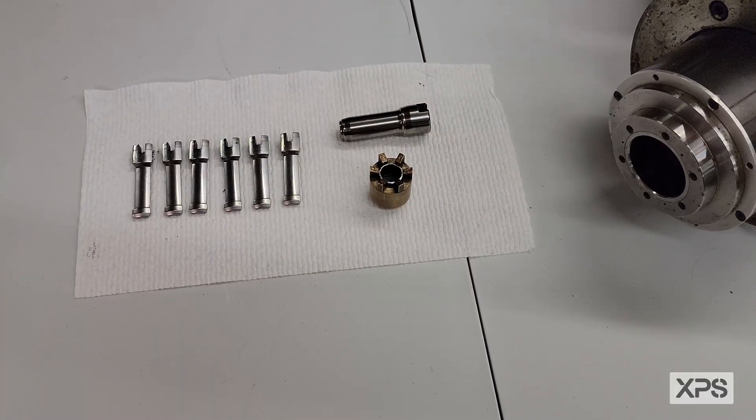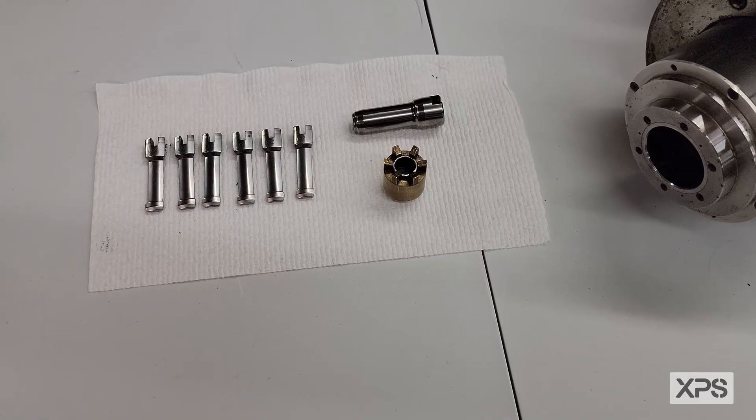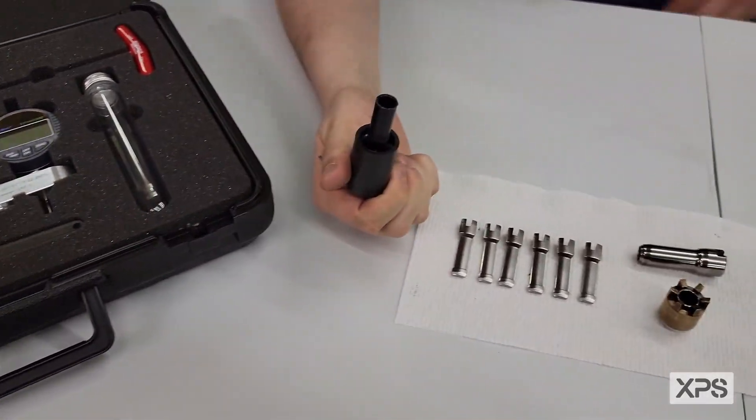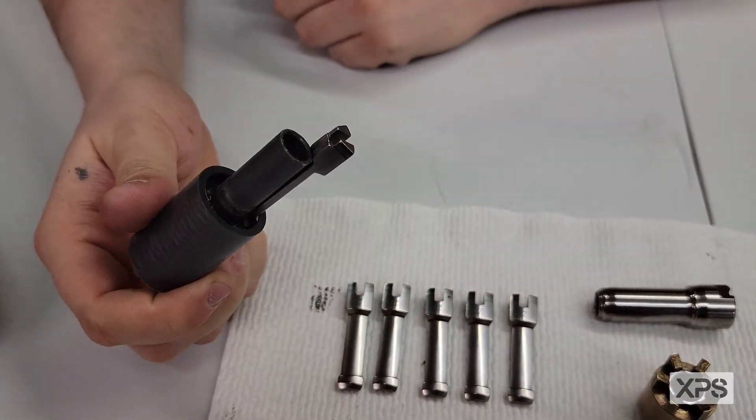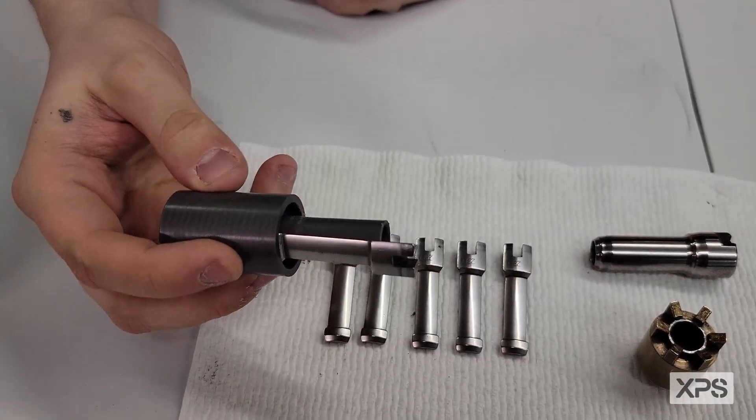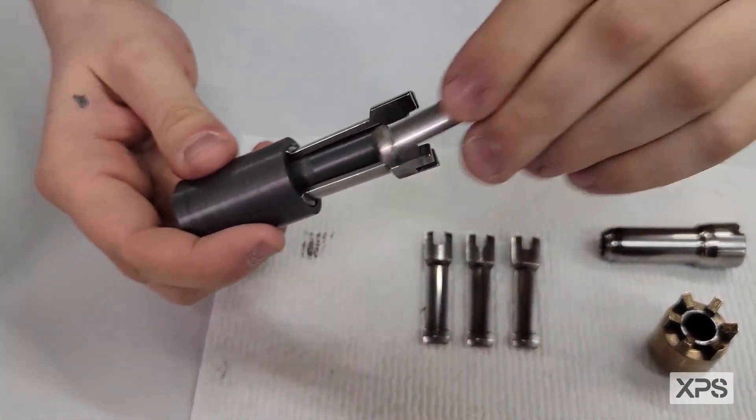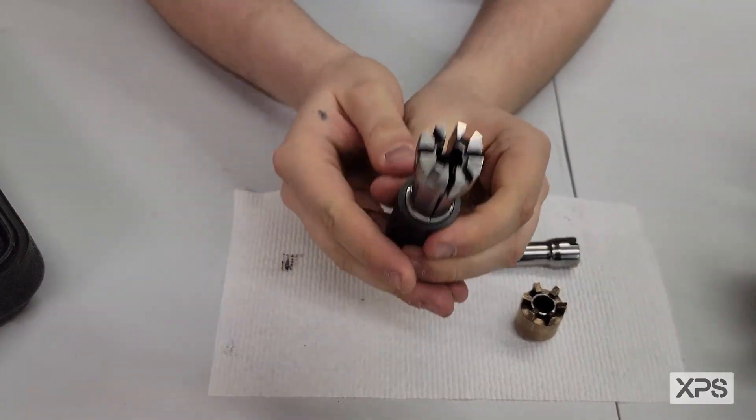After your fingers are greased up with Metaflux, you're going to grab your reinstallation tool. You're going to take one finger at a time and snap it to the reinsertion tool. The beauty of this tool is it's magnetized, so everything stays in place, making your life a lot easier. It should look like that when you're done.